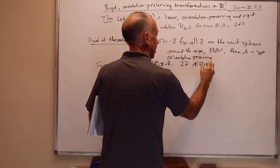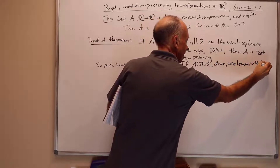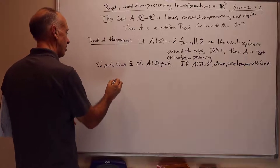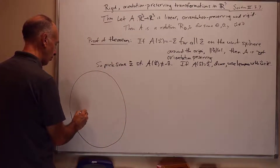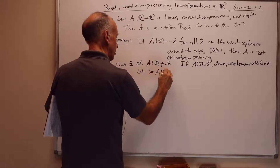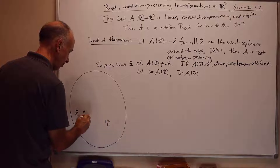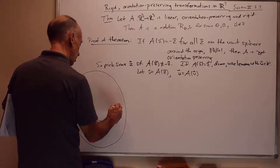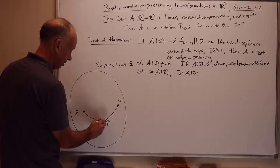If A of z equals z, we're done by the lemma, using u equals z. So we're assuming A of z is not equal to z, nor is it antipodal to z. Let's draw the unit sphere — a sphere of radius 1 centered at the origin. There's some point z on the surface. Let v equal A of z, and let w equal A of v. So we have z, then v, with a portion of the great circle connecting z and v, then w, with a portion of the great circle connecting v and w.